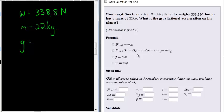The only formula we can use for all of these is the weight formula. So we know that weight equals mass times gravitational constant, which gives us 338.8 equals 22g.